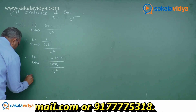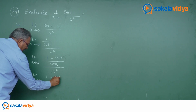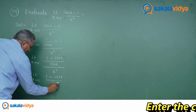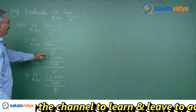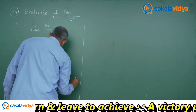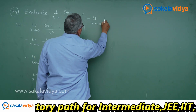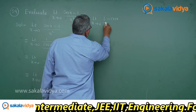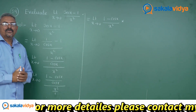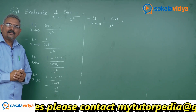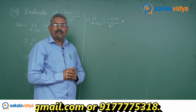This can be written for our convenience as limit x tends to 0: 1 minus cos x by cos x, and divided by x square written as x square by 1. This equals to limit x tends to 0: 1 minus cos x by cos x, multiplied by the reciprocal of x square by 1, which is 1 by x square.